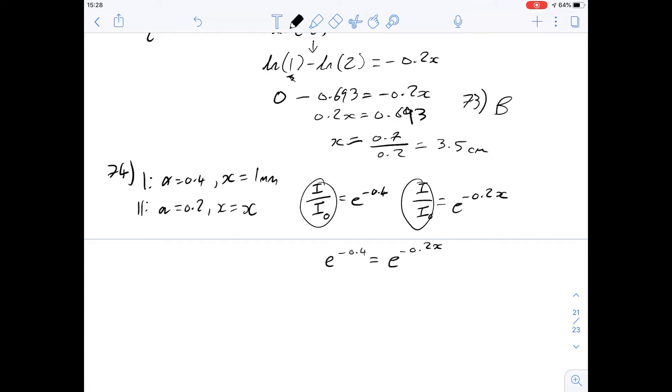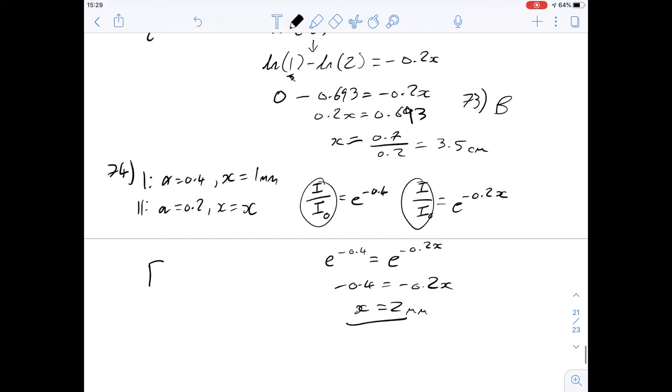From this you might already be able to get a value for x but if you take away the powers you can see that x is obviously going to be equal to 2 millimeters. In this case that means the answer for 74 is going to be D.